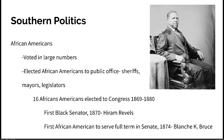African Americans also drastically changed the face of Southern politics. They voted in large numbers once the 15th Amendment guaranteed them that right, and elected African Americans to public offices — sheriffs, mayors, and legislators. Between 1869 and 1880, 16 African Americans were elected to the U.S. Congress. The first Black senator in 1870 was Hiram Revels. The first African American to serve a full term in the Senate was Blanche K. Bruce in 1874. This African American participation in Southern politics made a lot of Southern white Democrats very nervous about losing their political stronghold.